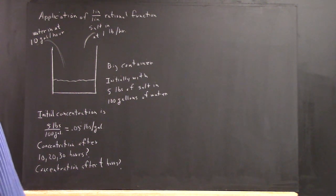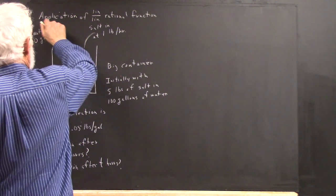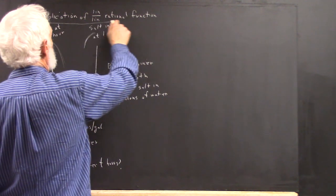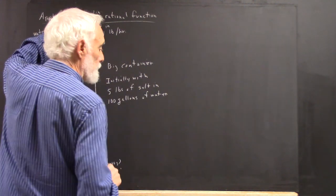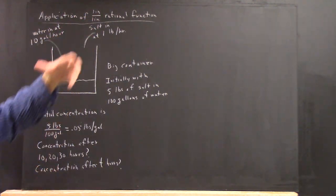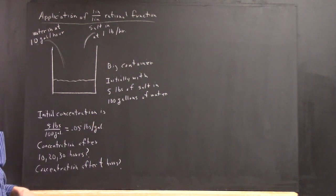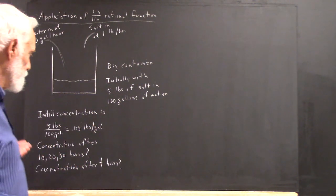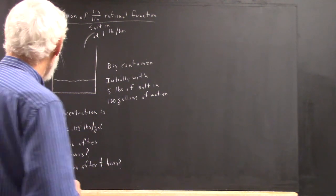We're going to look at an application of a rational function. In this case, it's going to be a linear divided by linear type of rational function — a linear expression over linear expression. We've learned to analyze these.